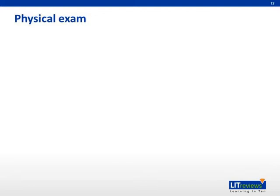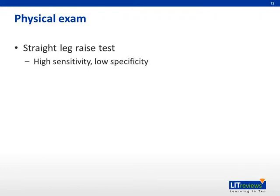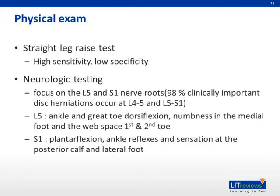The main findings to look for on physical examination include a positive straight leg raise test, which has high sensitivity but low specificity. Neurologic testing should focus on L5 and S1 nerve roots, as 98% of clinically important disc herniations occur at these levels. For L5, test ankle and great toe dorsiflexion, and numbness in the medial foot and web space between the first and second toe. For S1, test plantar flexion, ankle reflexes, and sensation at the posterior calf and lateral foot.